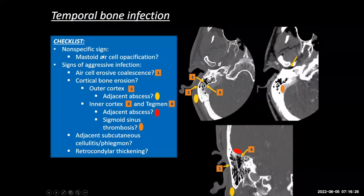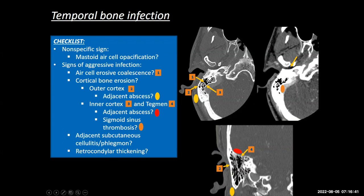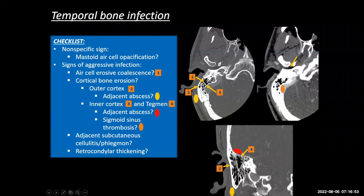Temporal bone — the nonspecific findings first. Unfortunately, just like in the sinuses, we often see some degree of opacification, even trace, in the mastoid air cells. The mastoid air cells communicate with the middle ear cavity, which communicates through the eustachian tube with the nasopharynx. People get backed-up flow there, especially kids who had a middle ear infection recently. Adults too commonly have some trace effusion. But that's not the specific sign of an aggressive infection.